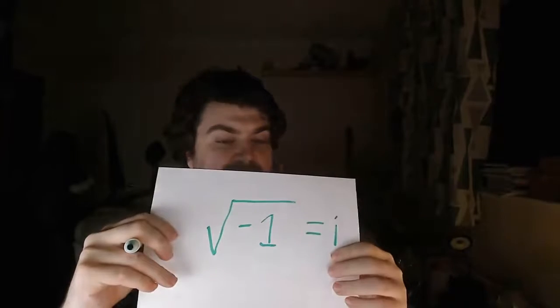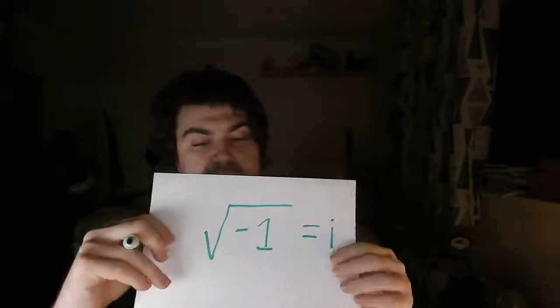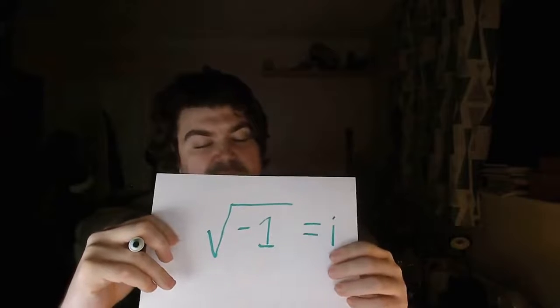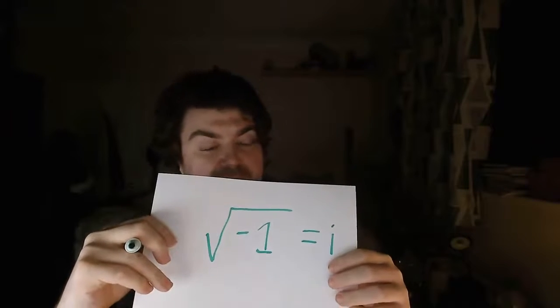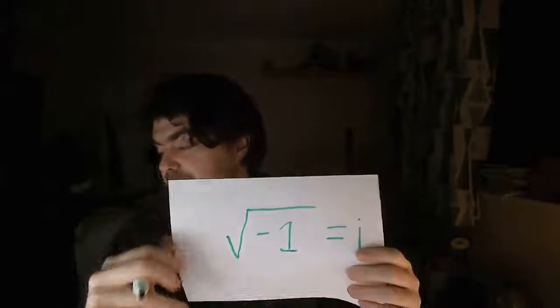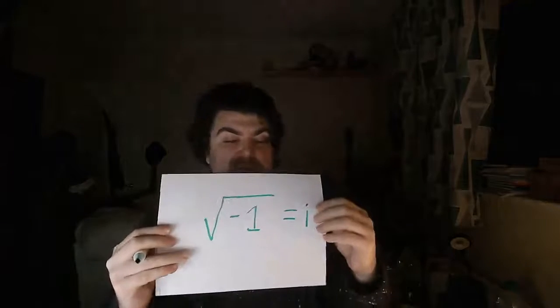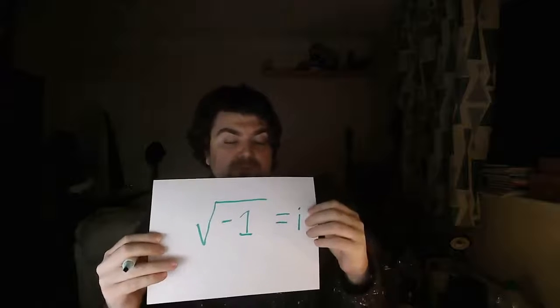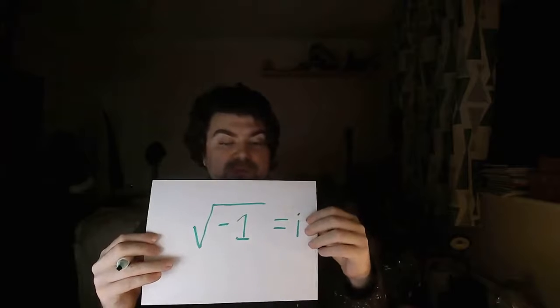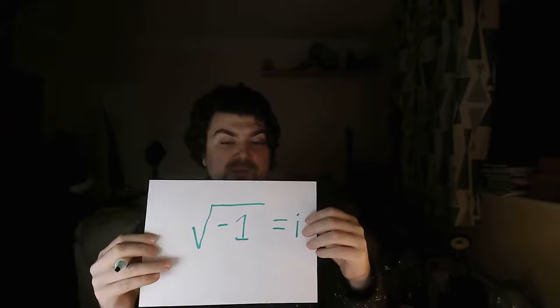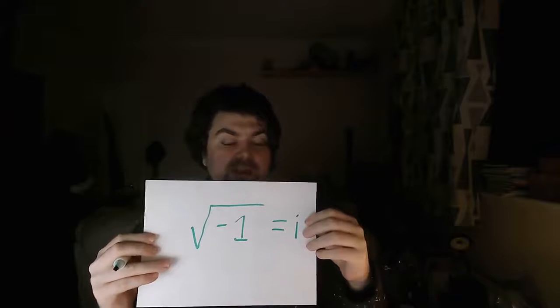A common mistake is writing e to the i pi equals minus one — it's more like one to the i pi equals minus one. That's the equation that inspired imaginary numbers, because minus one times minus one is one, so the square root of minus one — what number do you square to get i?